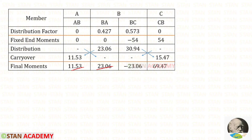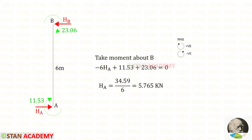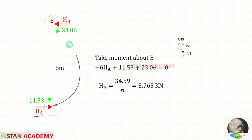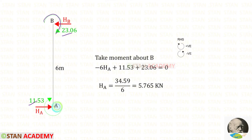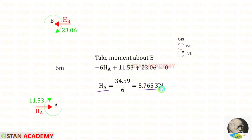Let us take these two moments and find the horizontal reaction in the member AB. To find the horizontal reaction HA, let us take moments about B. HA is acting in the anti-clockwise direction so it will be negative, and the distance is 6. The two moments are acting in the clockwise direction so both are positive. Finally for HA, we will get 5.765 kN.